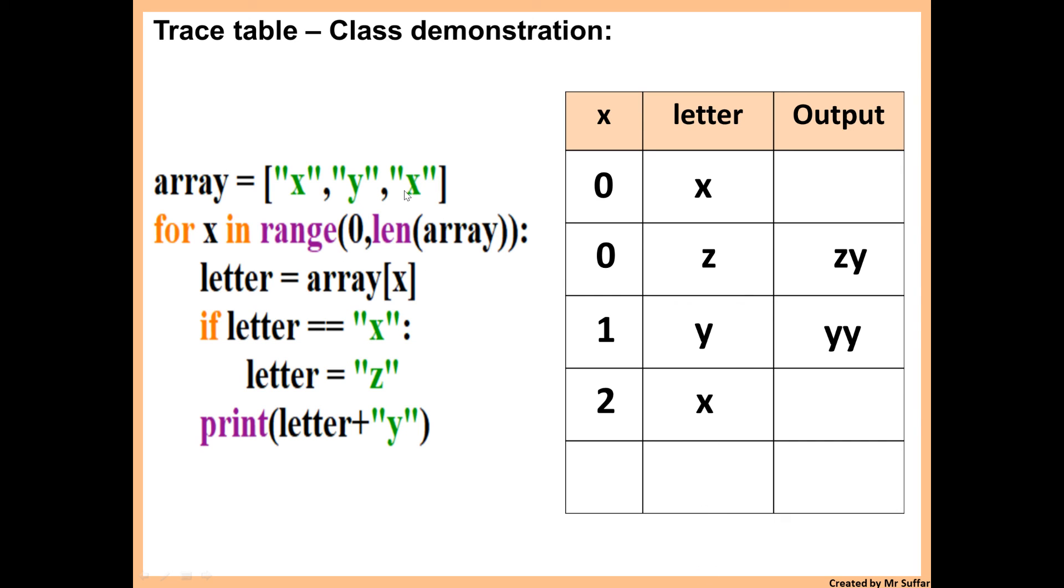So letter is now x. Then it says if letter is equal to x, yes that's true. Because it's true, we set letter to z. X will stay the same, it will stay two in this row. And then it says print letter plus y. So z plus y.